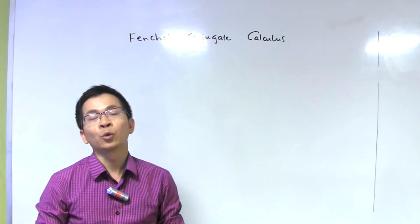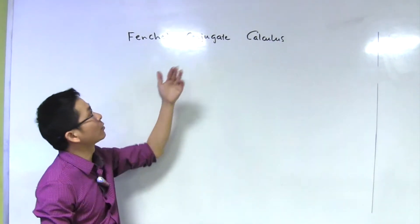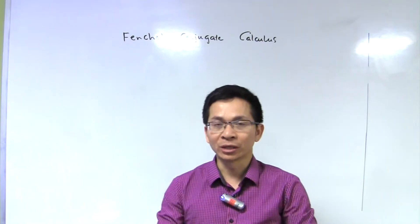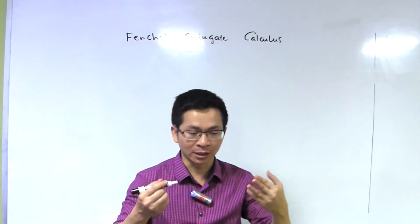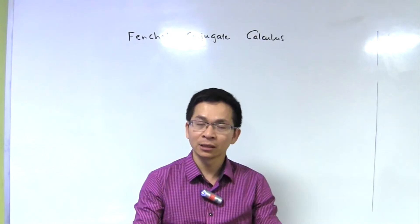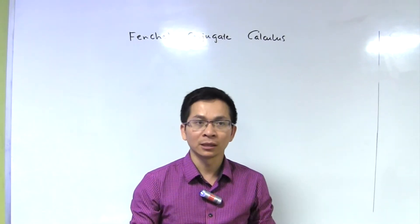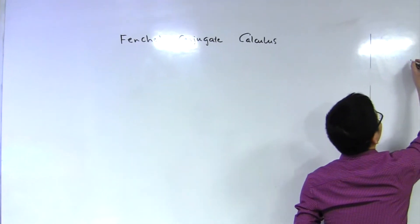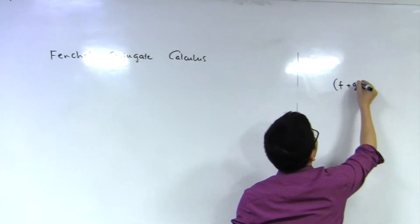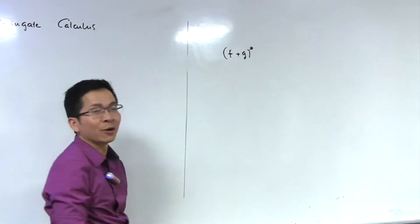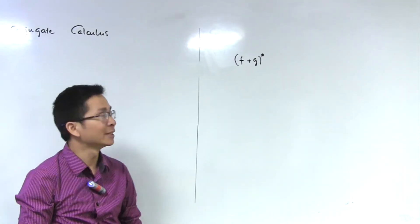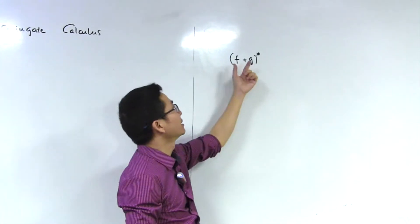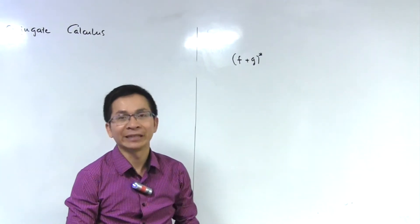In this lecture, we are going to work on the Fenchel conjugate calculus. Our goal is to obtain some formulas to compute the Fenchel conjugate of convex functions under some operations on convex functions. For example, given two functions f and g, how can we compute the Fenchel conjugate of the sum of the functions? We have to find a representation of the Fenchel conjugate of the sum in terms of the Fenchel conjugate of each function.